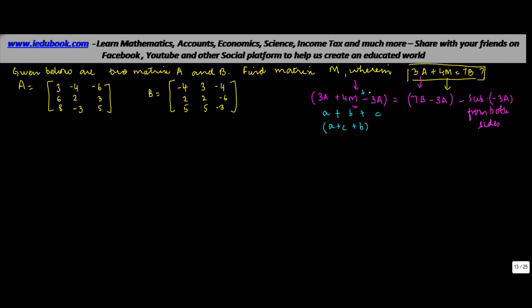Now this minus 1 can also be written as plus minus 3A. Assuming that be the case, what we will do is let me just simplify this. I will rewrite this side of the equation as 3A minus 3A, I have just taken this here, plus 4M is equal to 7B minus 3A.